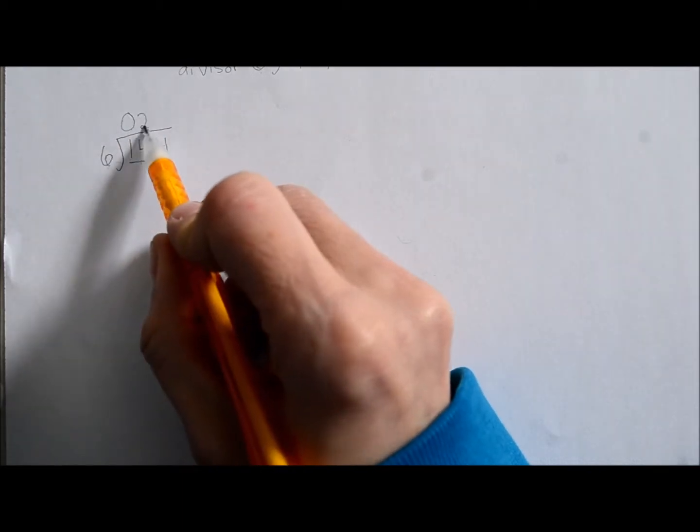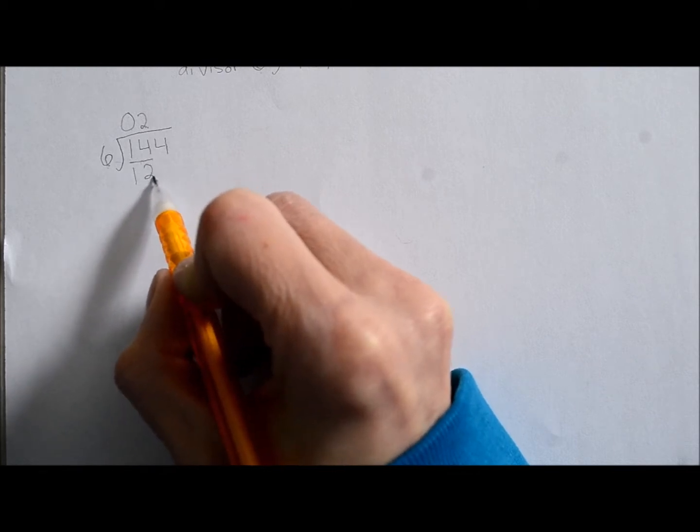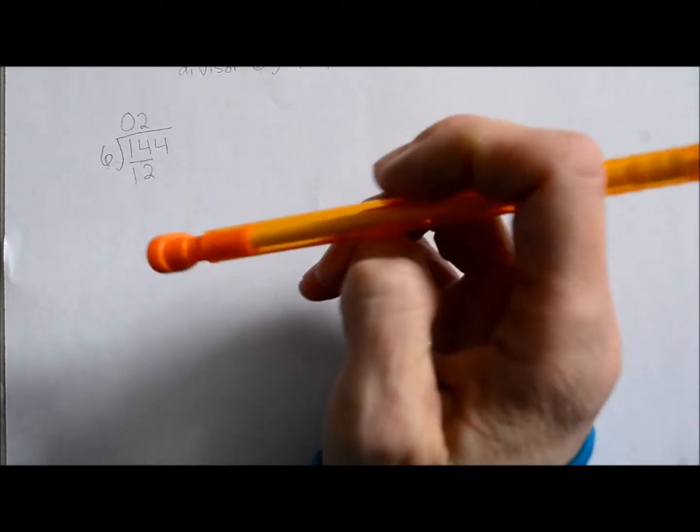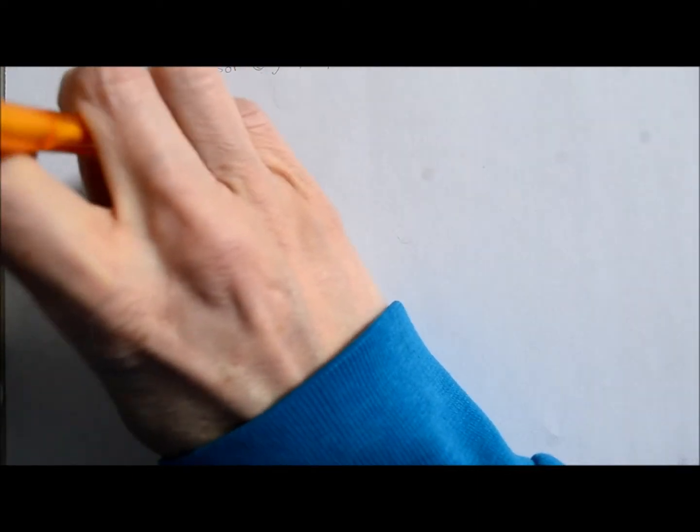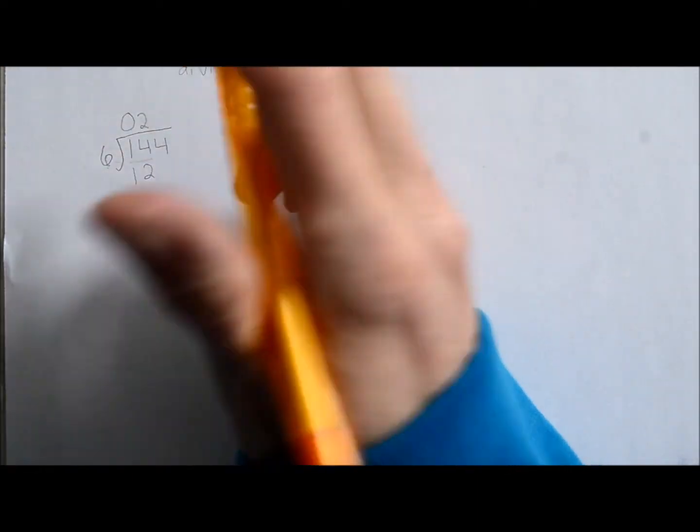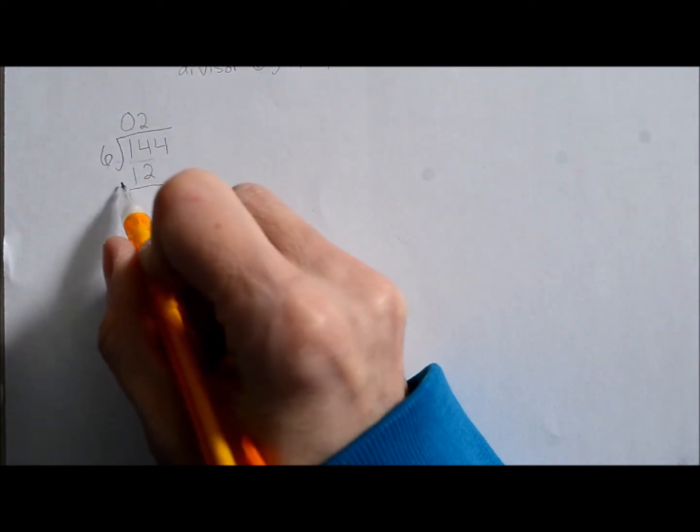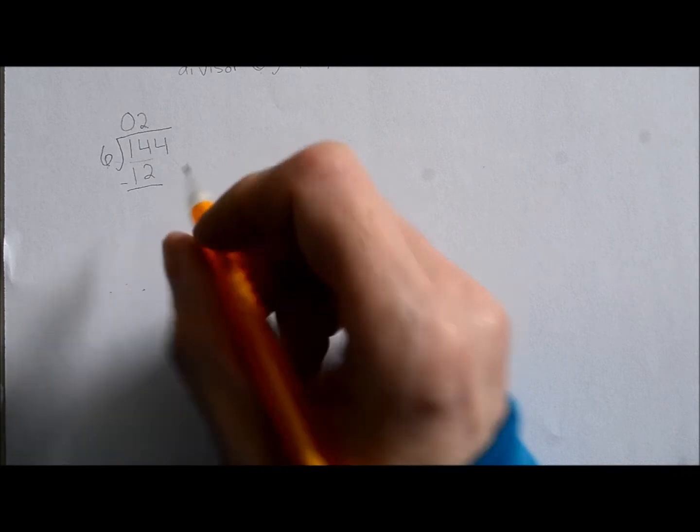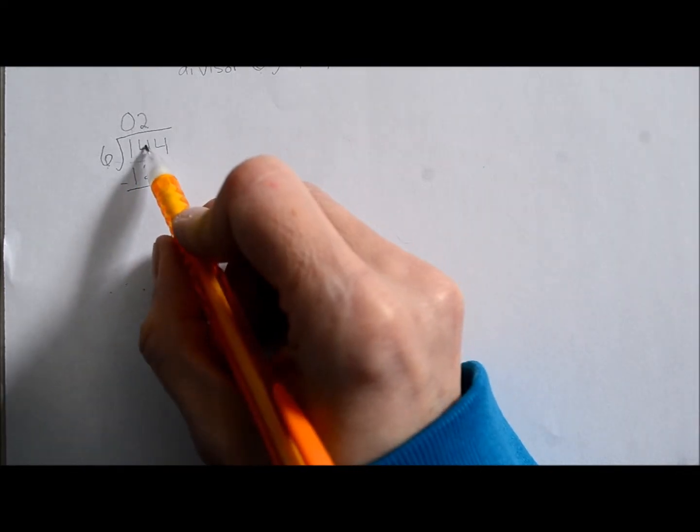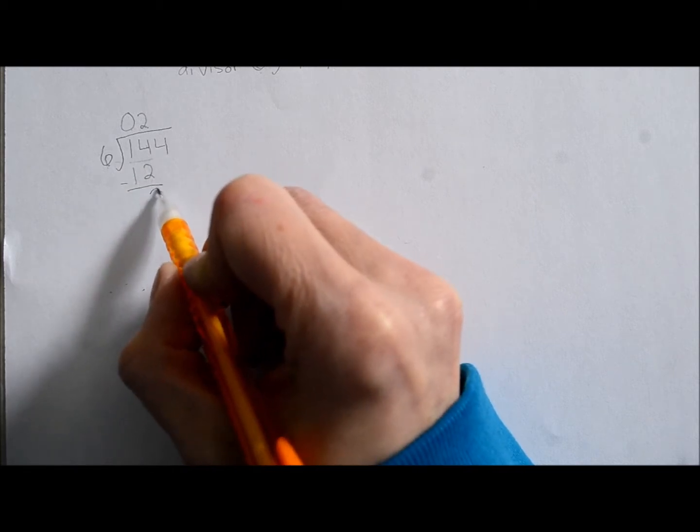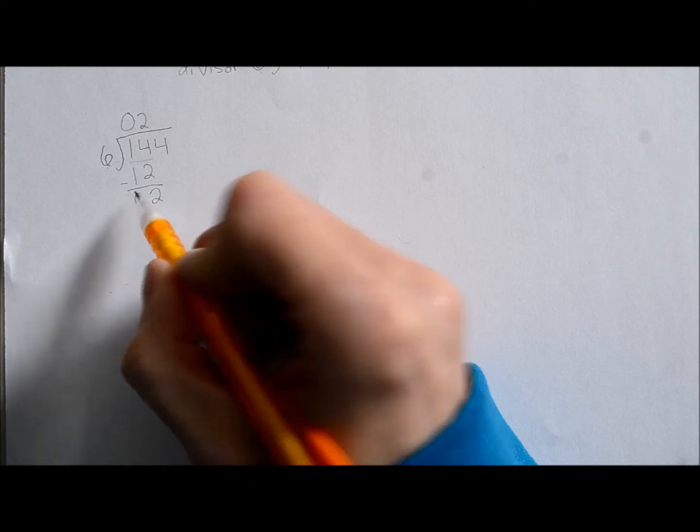So just for argument's sake, I'm going to erase this line here because it really is not part of the question. I was just showing you where we were looking. There won't be a line here when you do it. There will, however, be a line here because now we have to take away 12 from 14. So what's four take away two? Two. What's one take away one? Nothing.